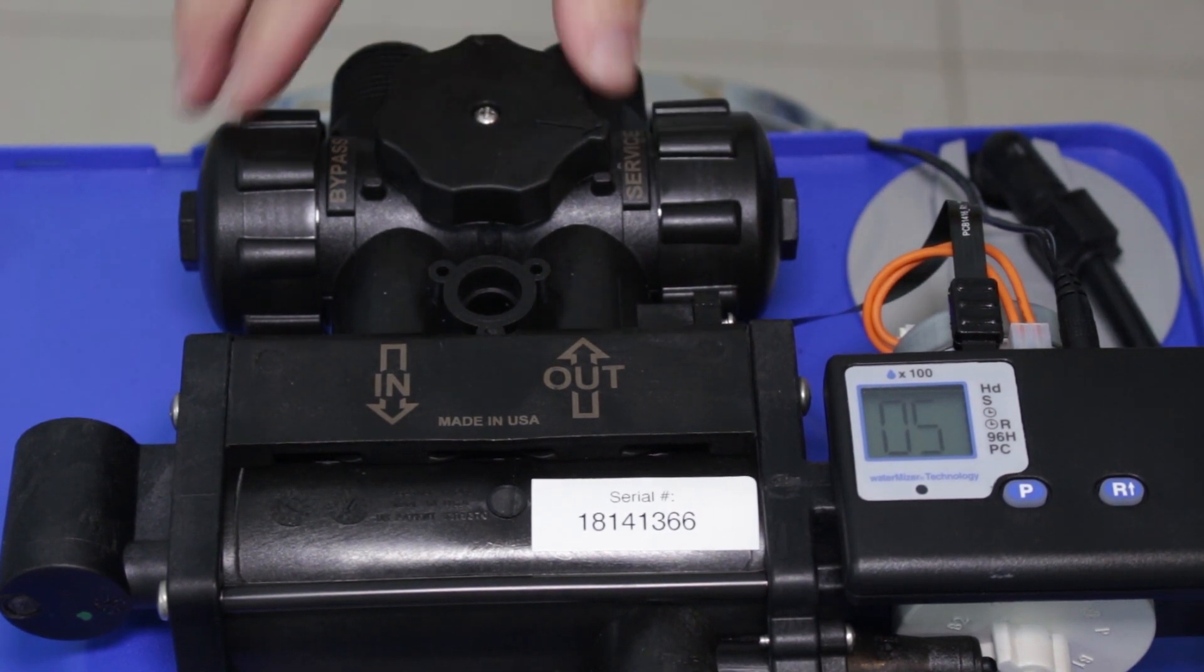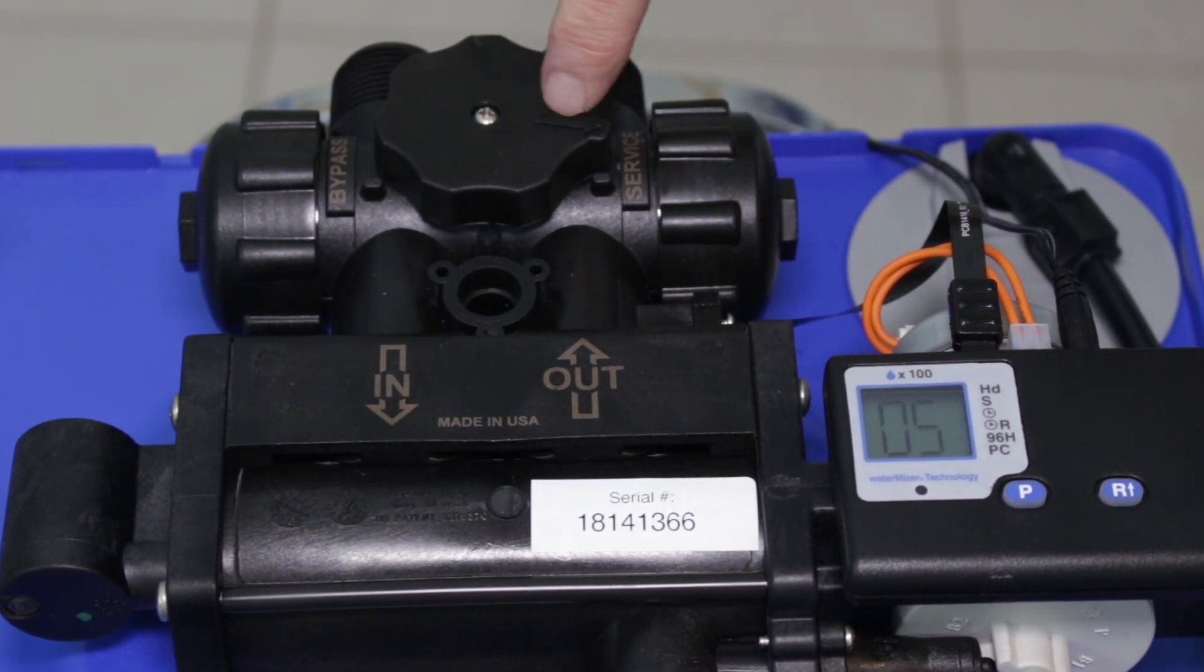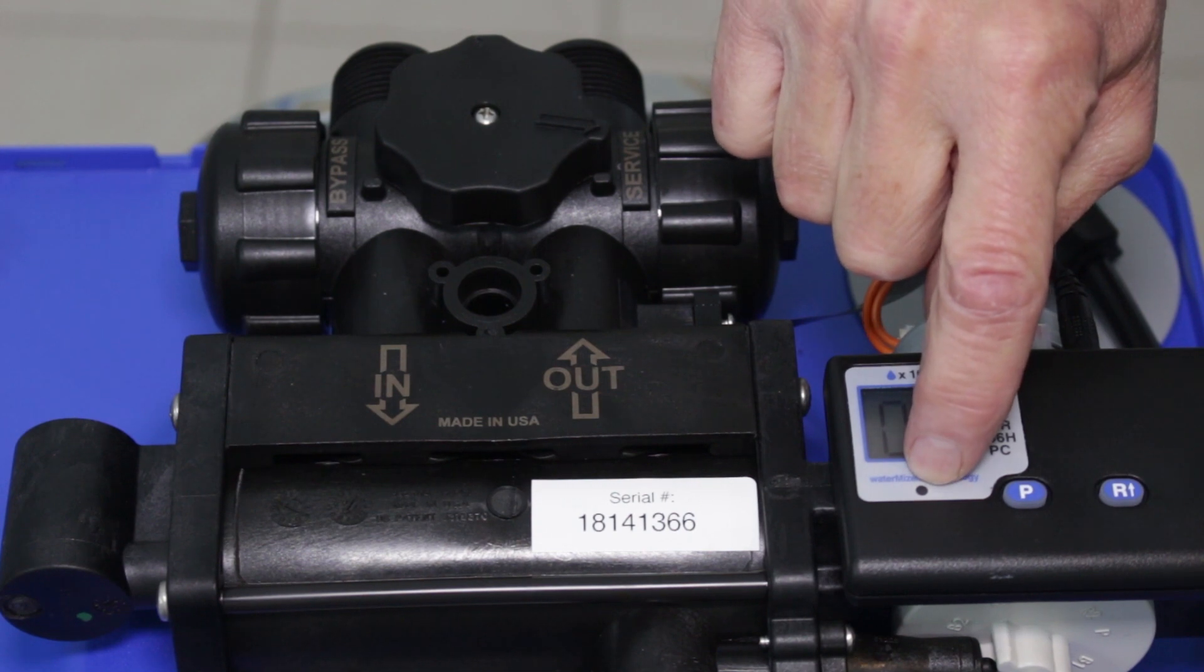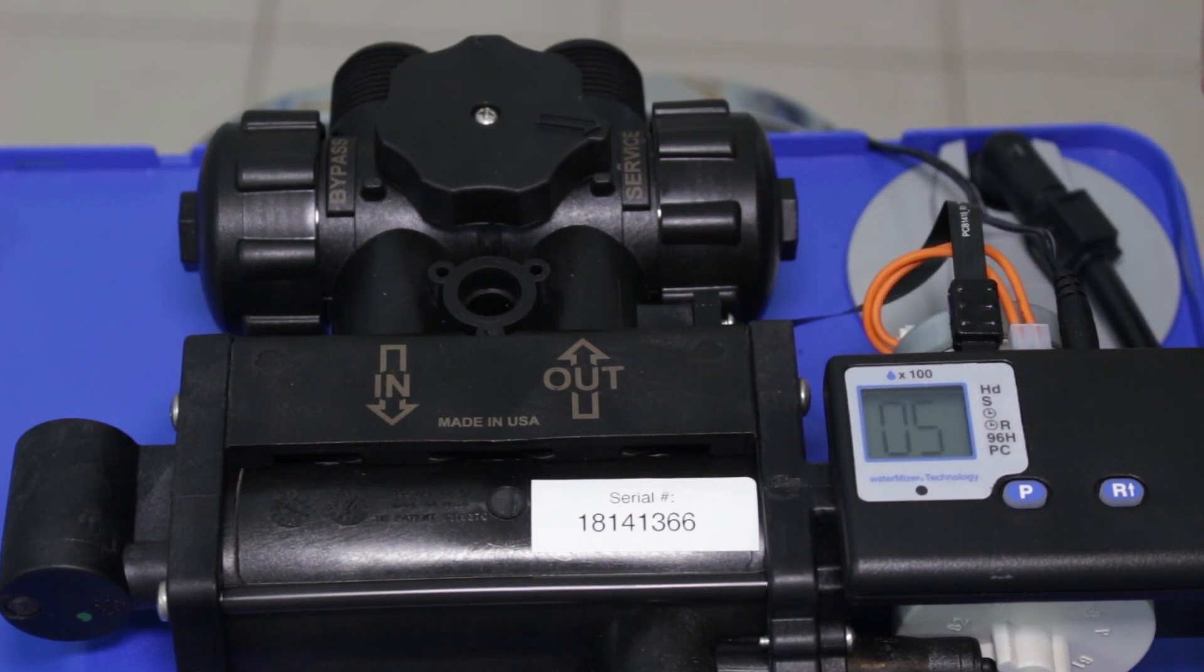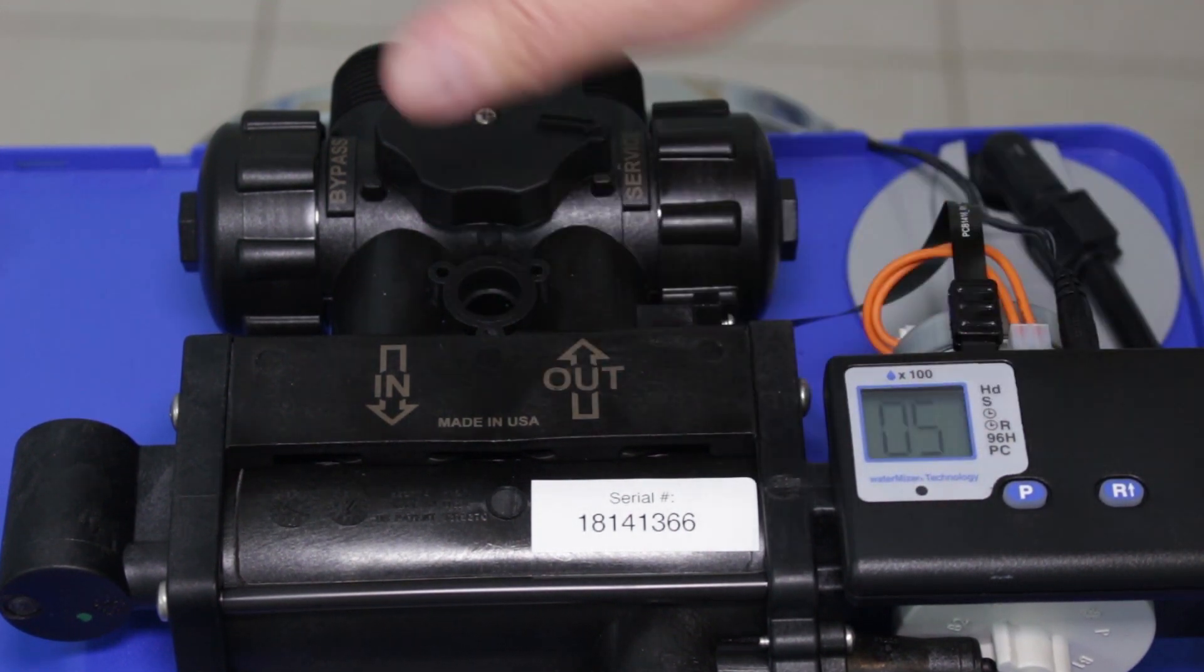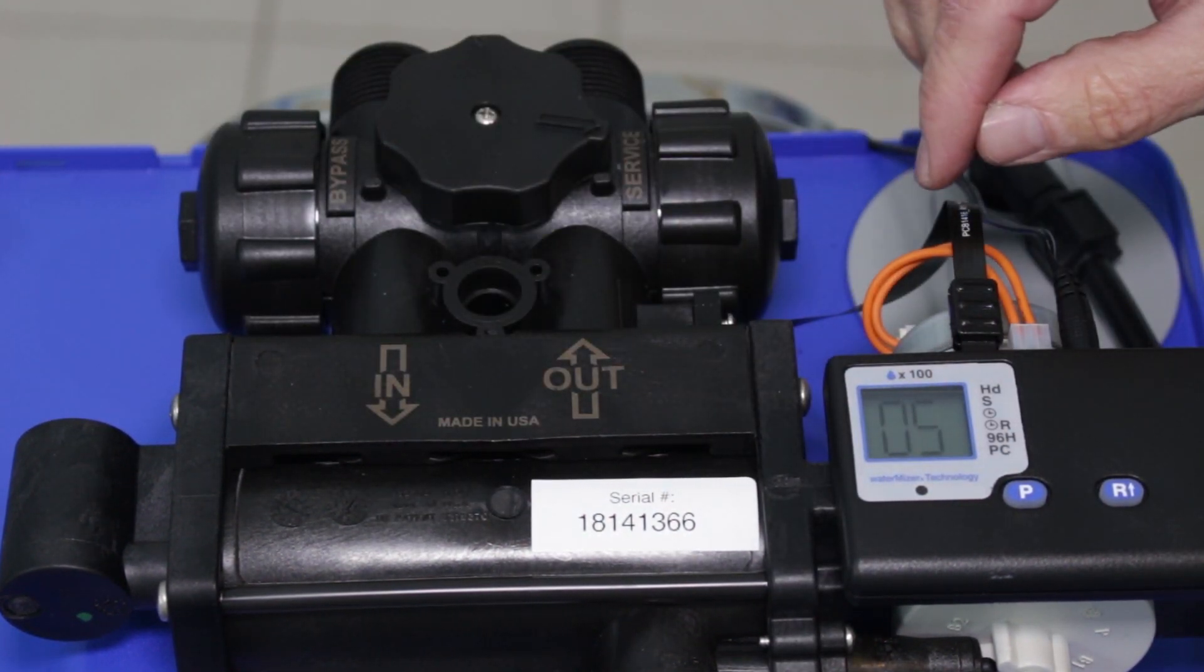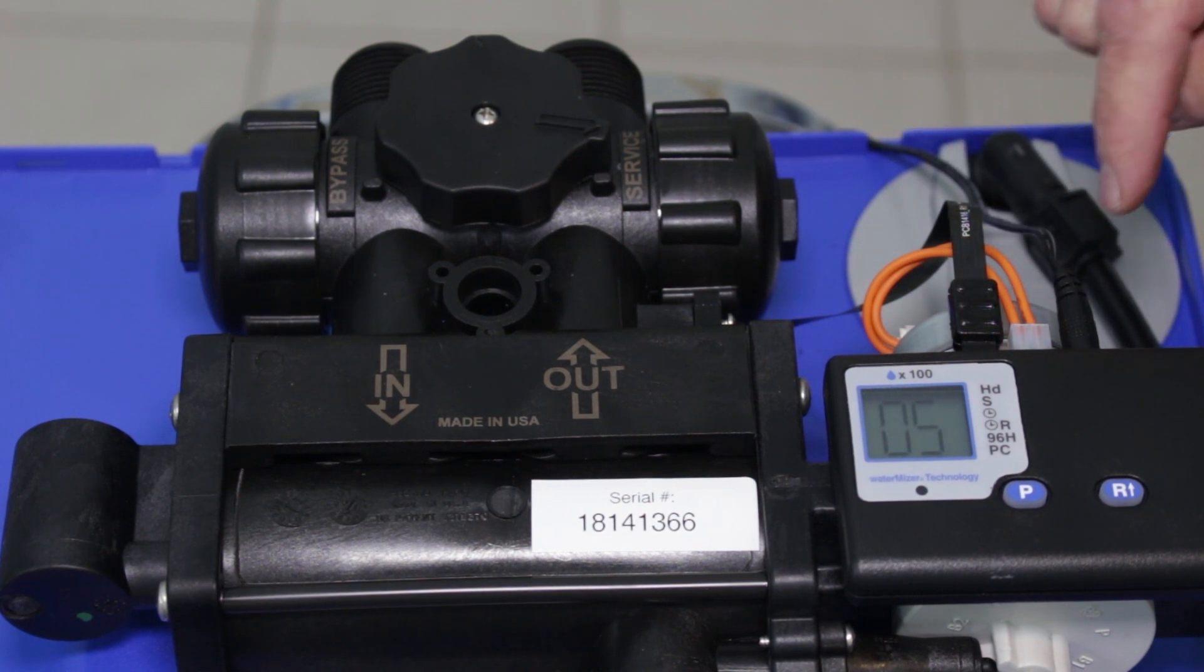You need to make sure that the bypass valve is in the service position. That's this arrow pointing towards service, and then you need to run some water in the house. When you run water in the house, this little green light down here should be flashing to indicate that there's flow through the system. If it is, then everything's working correctly. If it's not flashing, then there's a problem with the system.